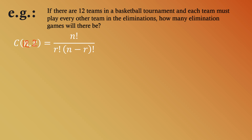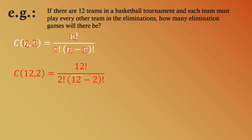So n equals 12 and r equals 2. Writing our equation: C(12,2) equals 12! over 2! times the quantity 12 minus 2 factorial. Simplifying the denominator: 12 minus 2 equals 10, giving us 12! divided by 2! times 10!.